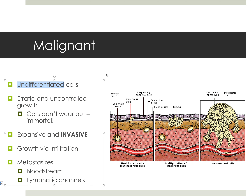Now moving on to malignant growth. Malignant tumors have undifferentiated cells — they didn't complete the differentiation process, so they don't look like the parent tissue. They are erratically growing in an uncontrolled pathway. Cells don't wear out — they're immortal and keep dividing as much as they want. They can grow by expansion, but they're also invasive, meaning they can move around and infiltrate surrounding tissue. They can metastasize through the bloodstream or lymphatic channels, or both, since wherever you find one, you find the other.